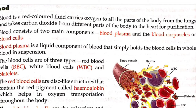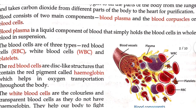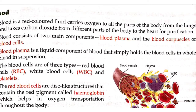Blood carries carbon dioxide to the heart for purification — the binding of oxygen in blood and removal of carbon dioxide happens near the heart. Our lungs are on both sides of the chest, the heart is in the center, oxygen from the lungs binds with blood at the heart, and then blood carries oxygen throughout the body.